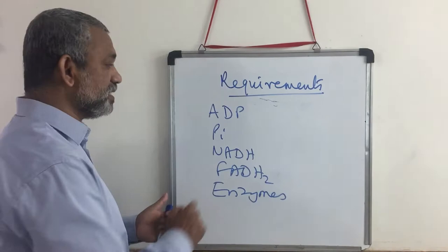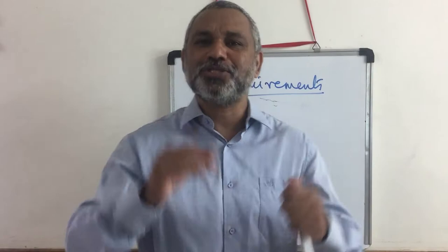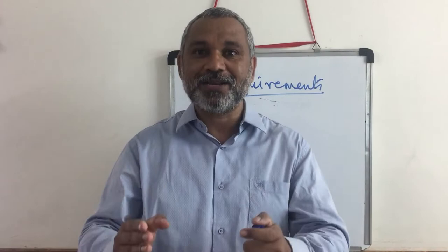So these are our requirements: we need ADP, inorganic phosphate, NADH, FADH2, and a whole set of enzymes and proteins. Let us see how these molecules are made available in the mitochondrial matrix so that oxidative phosphorylation can be carried out.